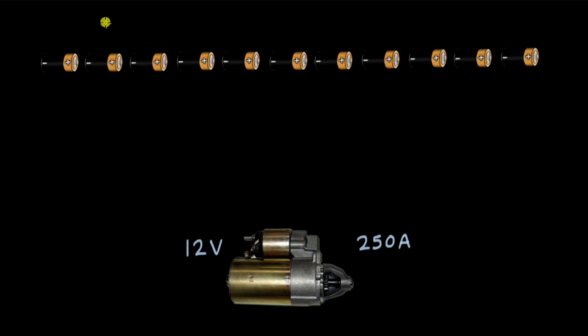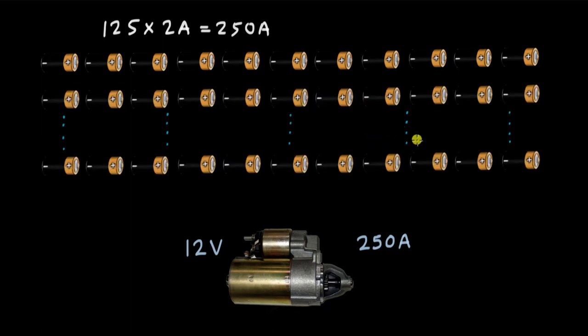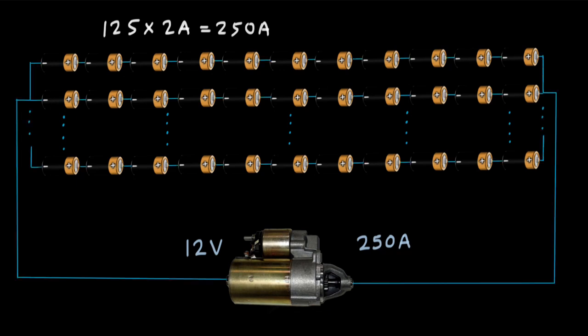So if we have 125 of such series connected batteries in parallel to each other then the current in each branch would be 2 amperes and the total current would come out to be as 250 amperes meeting the current requirement. So we would need to add more batteries in parallel to form a series parallel or a mixed combination and we can connect them to each other to form the entire circuit.